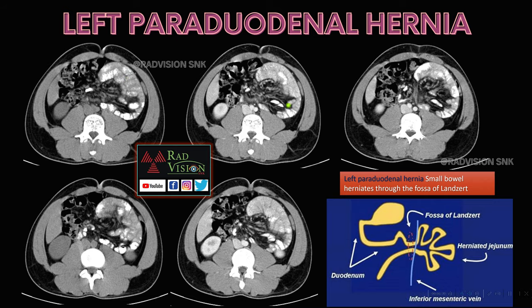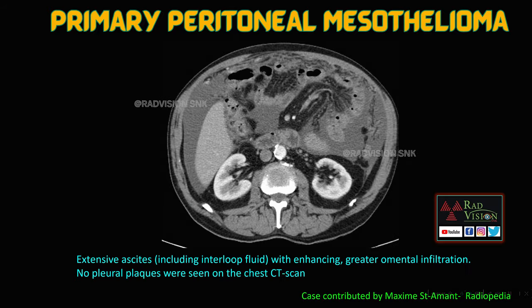In internal hernias, multiple small bowel loops can be clustered in the left anterior peritoneal space with herniation of vessels through the foramen of Landzert. This is a left paraduodenal hernia where small bowel loops herniate from right to left through the foramen of Landzert, while the right side herniates through the fossa of Waldeyer. Left paraduodenal hernia also mimics a cocoon.